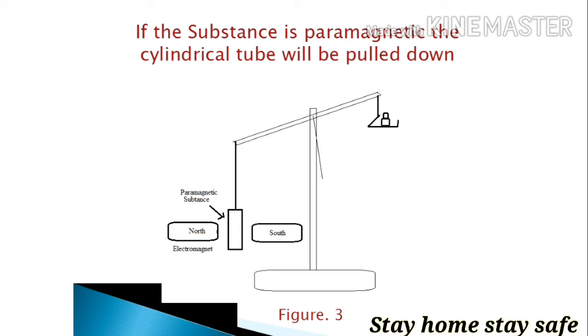Now if the substance is paramagnetic, the cylindrical tube will be pulled down. You can see in the diagram the magnetic tube is going close, it is attracted by the electromagnet.